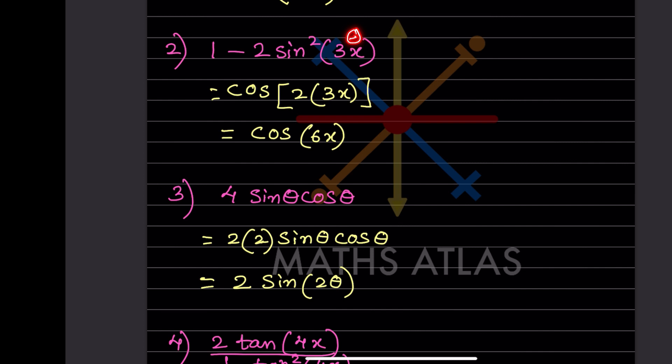Now we have 1 - 2sin²3x. Recognizing the identity 1 - 2sin²θ = cos2θ, here θ = 3x, so this becomes cos(2·3x), which we write as cos6x.